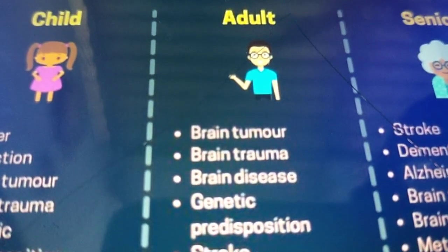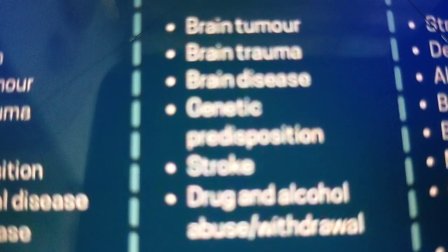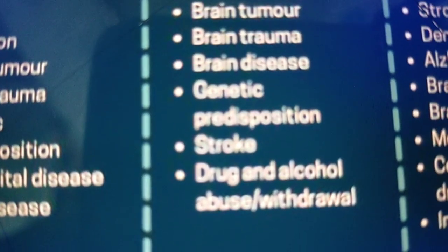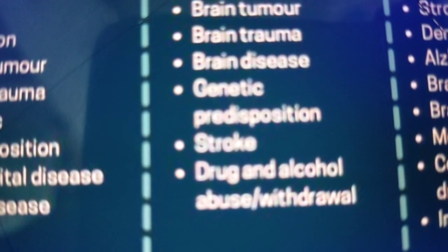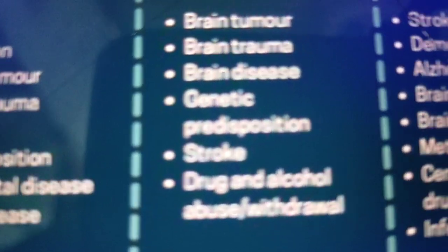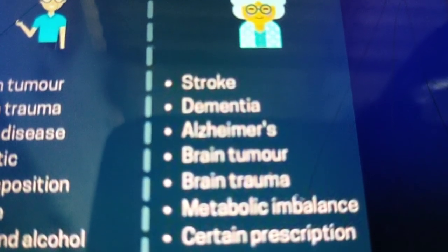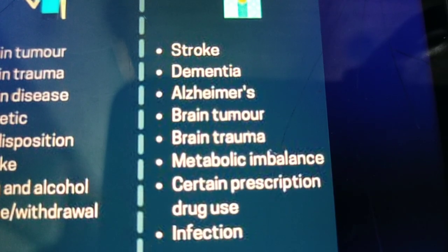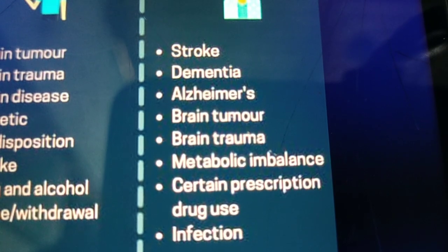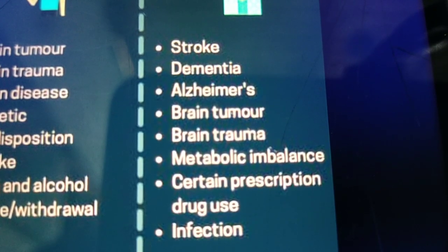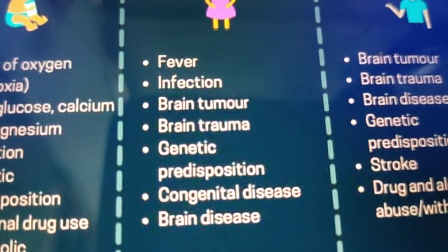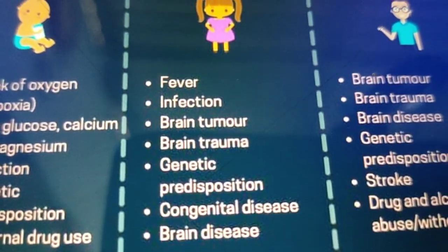In adults, seizure causes include brain tumor, brain trauma, brain disease, genetic predisposition, stroke, and drug and alcohol abuse or withdrawal. In elderly patients, causes can include stroke — hemorrhagic or non-hemorrhagic — dementia, brain tumor, brain trauma, metabolic imbalance, certain drug use, and infection such as meningitis. Genetic predisposition is a risk factor across all age groups.